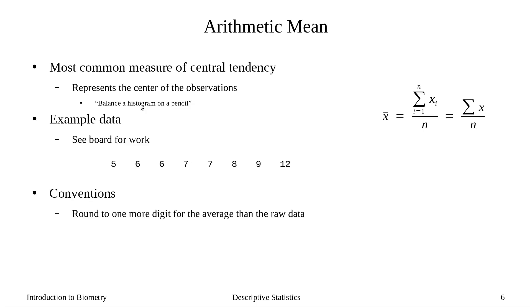The sample mean is abbreviated x-bar, or y-bar, or z-bar, depending on what we name our variable. By convention, I'm going to use x-bar for our mean. The mean is calculated as the sum of all of our data points divided by the number of data points in our sample. So our average is the sum of our data points divided by our sample size.